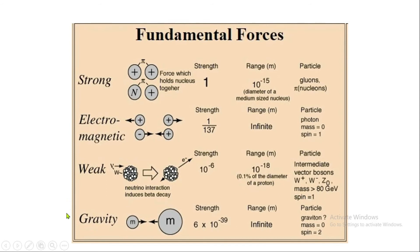The next natural force is gravity. Between very massive objects, the gravitational force becomes significant. However, the strength of gravity is extremely low — it is 6×10⁻³⁹ times the strength of the strong force — making it by far the weakest of the four fundamental forces.